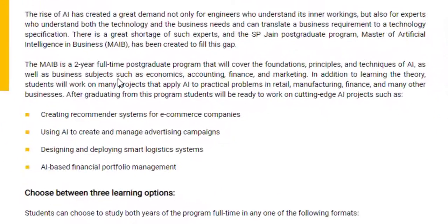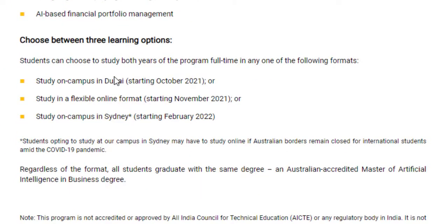If you want to study in Dubai, it will be starting in October 2021. If you are studying in Sydney, it will be starting in February 2022, and if you're studying online, the classes will be starting in November 2021. For Sydney, it will only open on the condition that Australian borders are open to international students.